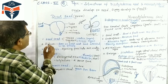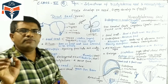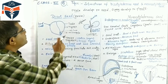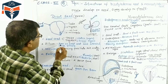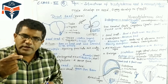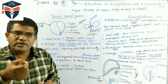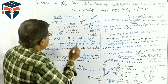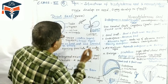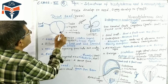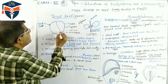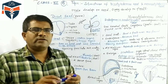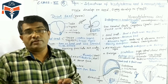Another part of the seed is the hilum. Seeds occur inside fruits and attach to the fruit wall. The hilum is a scar or scale-like structure on the seed coat at the point where the seed was attached to the fruit. By this hilum, the seed is attached with the fruit.